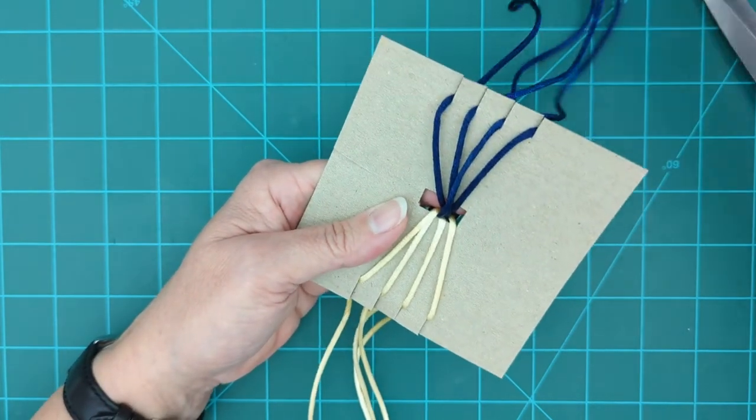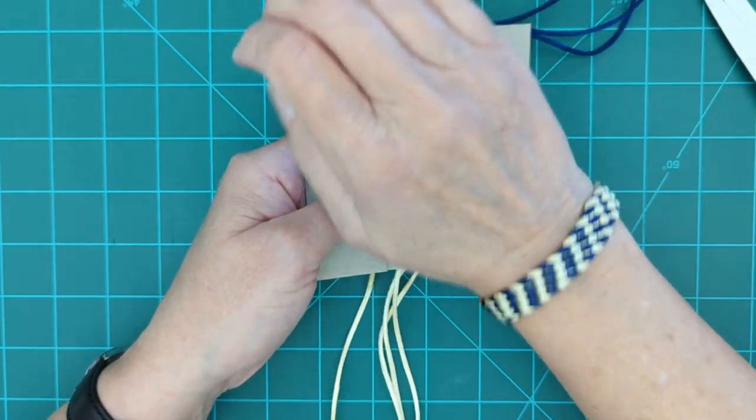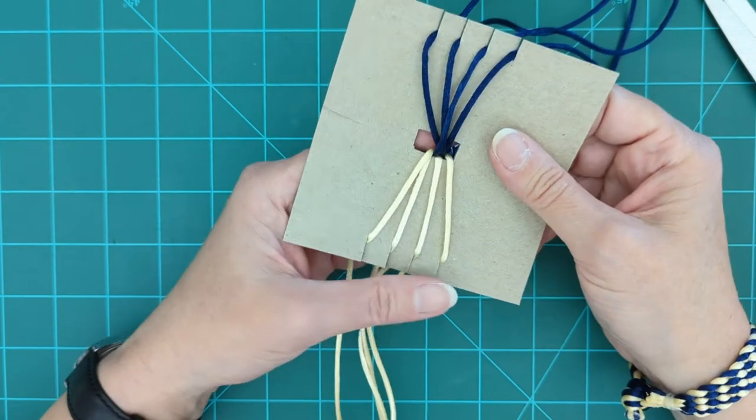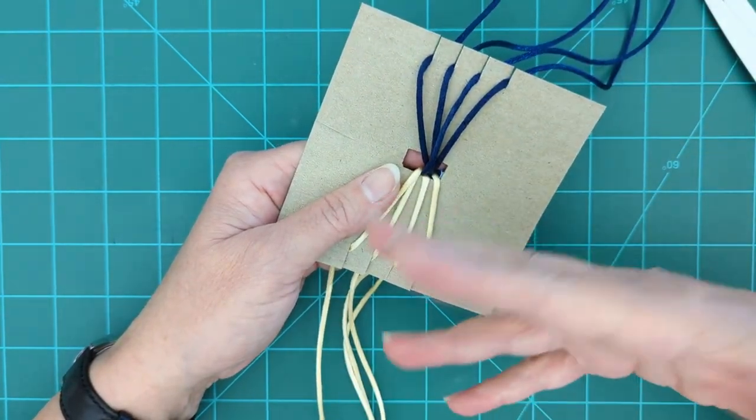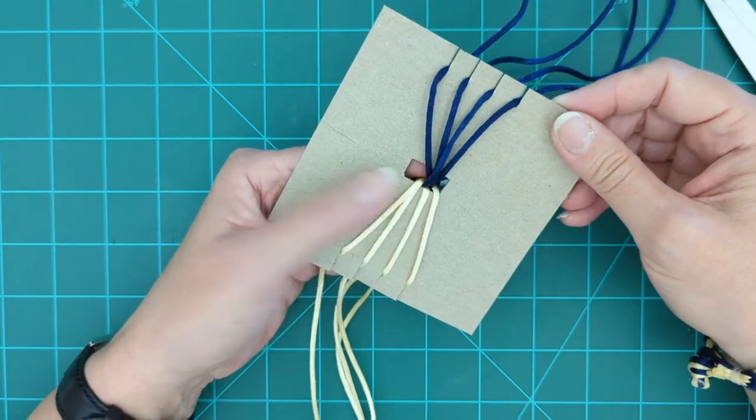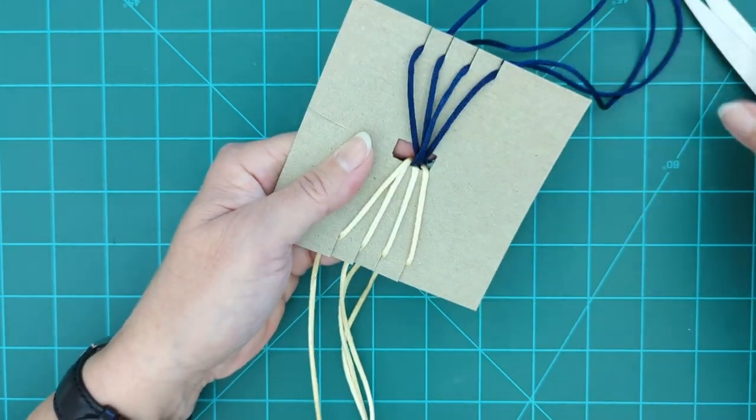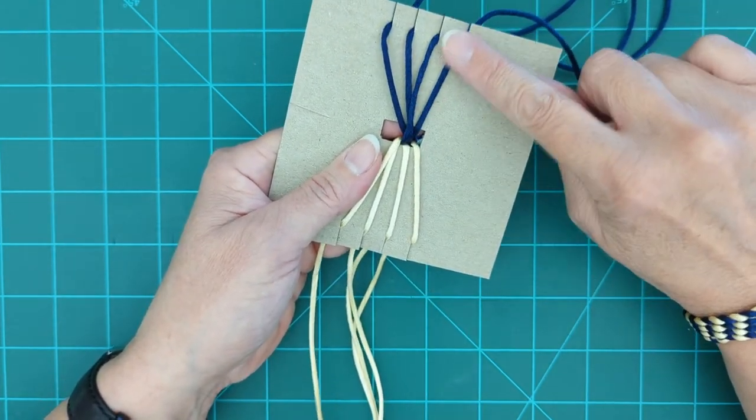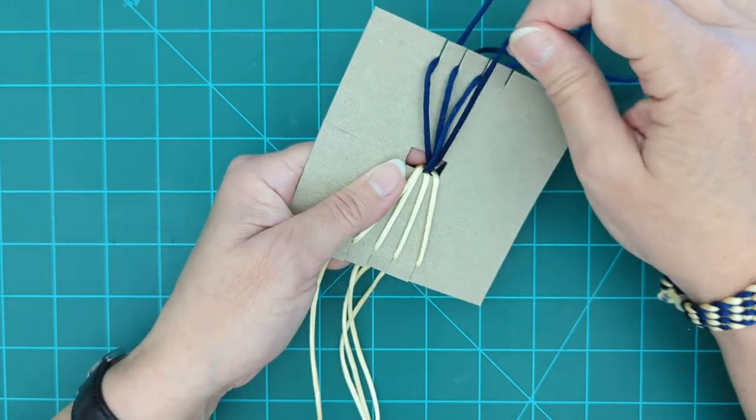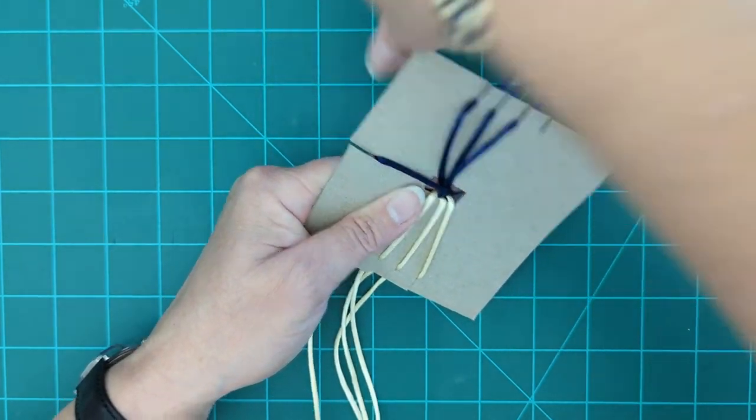One of the things I like about this craft is I think it makes for a very attractive product. This is a good, what I think of as a TV craft. This is something that you can do once you get your pattern established. This is something you can do while you're doing other things. So for this pattern, you're going to take your top right blue and you're going to move it over to that side.